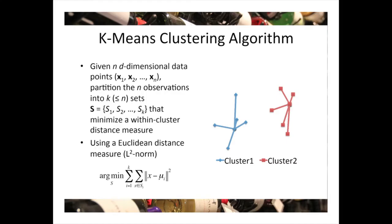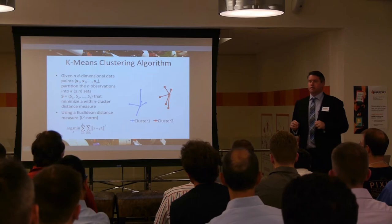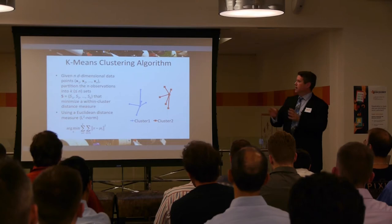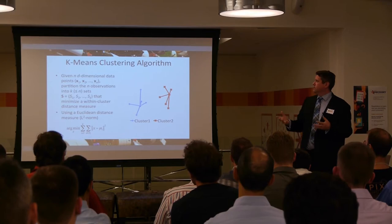This is a very basic algorithm called K-means, also called Lloyd's algorithm. The idea is you have data points and you want to determine the best clusters to assign them to. We start with n d-dimensional data points x1 up to xn, and we want to partition those n observations into k sets. K must be less than or equal to n — if it equals n, it's not a very interesting problem. Sometimes you care that it's exactly k, and sometimes k or fewer.